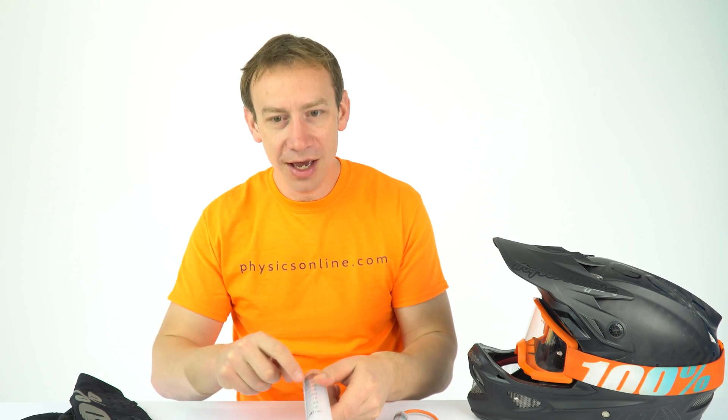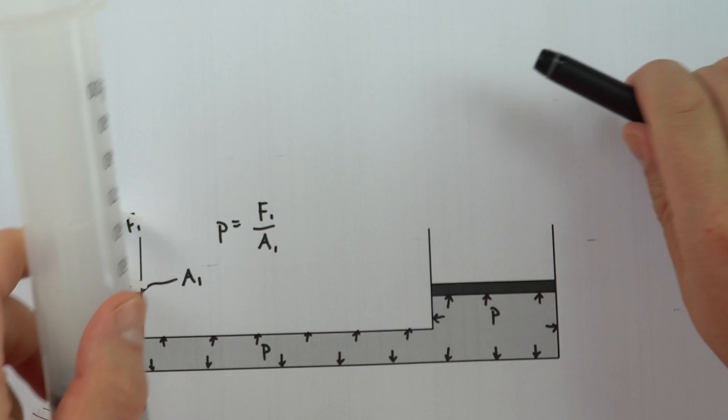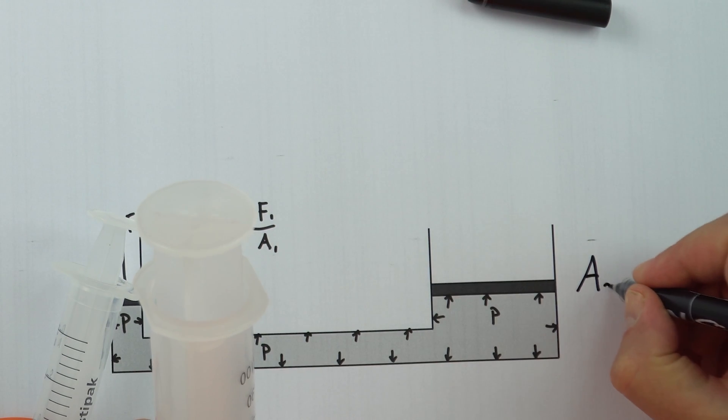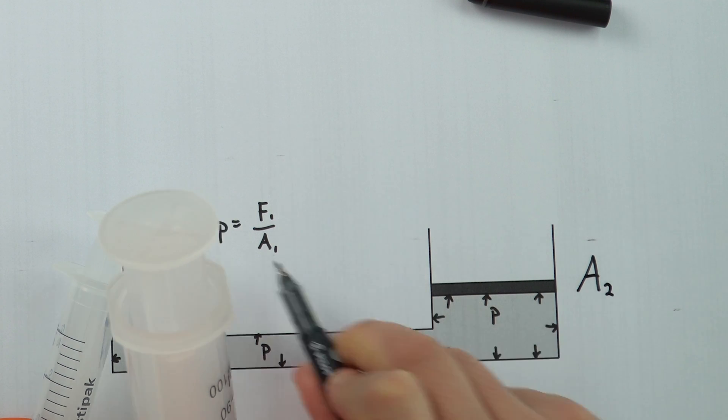The reason for that is that here we have a piston which has a much larger area and I'm going to call that A2. I've just made that A bigger to show it's bigger than A1, and there's going to be a force here as well.